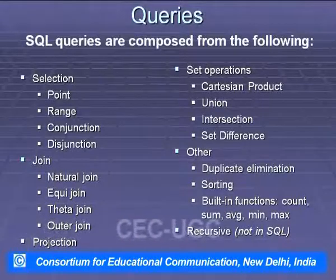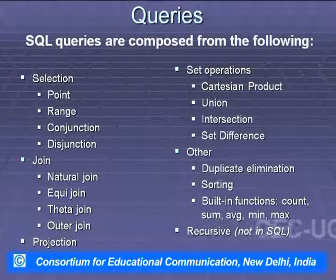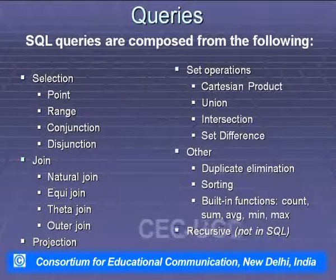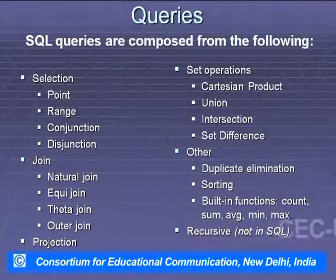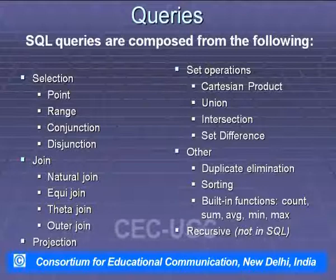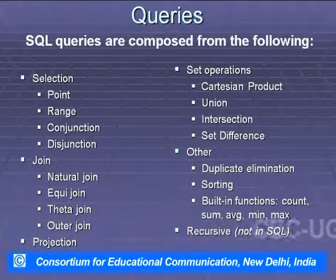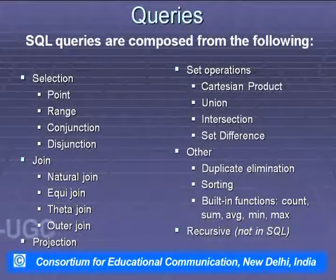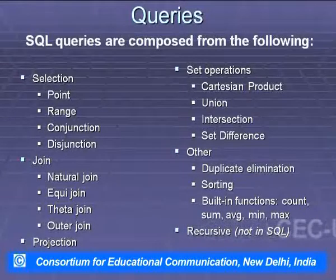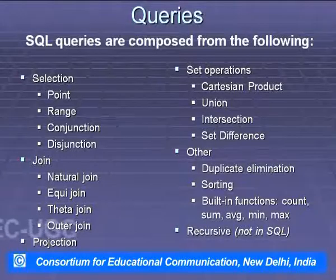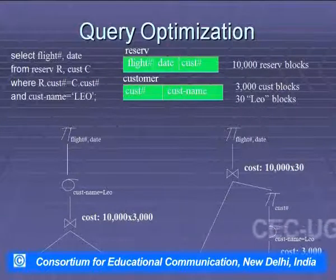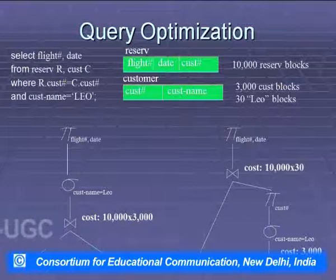SQL queries are composed from the following operations: selection (point, range, conjunction, disjunction), joins (natural join, equi-join, theta join, outer join), projection, set operations (Cartesian product, union, intersection, set difference), as well as duplicate elimination, sorting, and built-in functions like count and sum. Recursion is not in SQL. SQL queries can be optimized through SELECT-FROM-WHERE constructs.